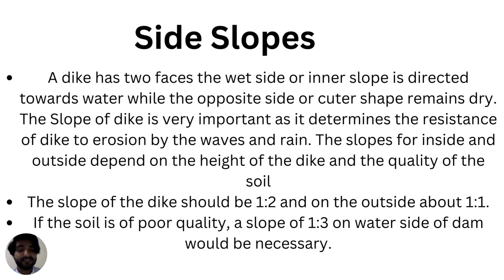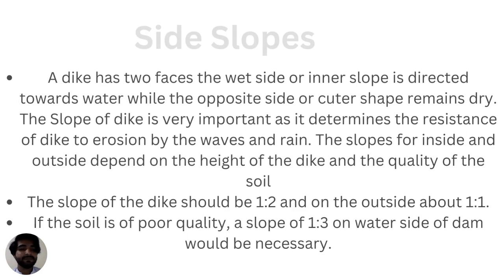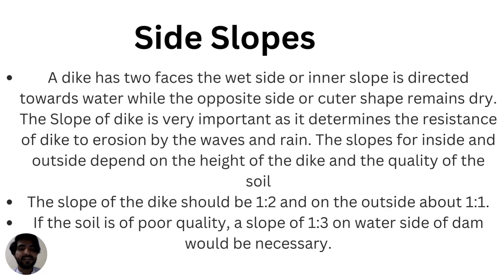The third component is side slopes. After preparing the base and crown, you then prepare side slopes for the fish pond construction. A dike has two faces: one from the wet side and one from the drier side. The wet side is always the inner side, while the outer side is the drier side. The inner side slope is directed towards the water, while the outer side remains dry. The slope of the dike is very important as it determines the dike's resistance to erosion by waves and rain.